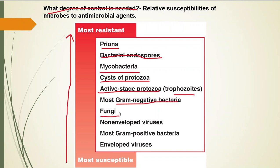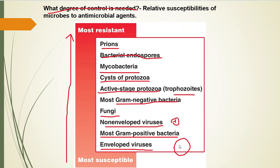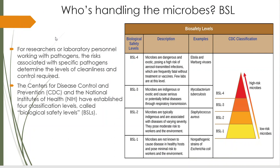Fungal infections are a little bit harder to deal with because fungi are eukaryotes like us — it's hard to find something to target that you don't also have. For example, one of the main things we target in fungi is their cell wall. We don't have cell walls, but I can't target their ribosomes because their ribosomes are the same as ours. Following that are non-enveloped viruses — just a capsid with genetic material inside — then most gram-positive bacteria, and finally our most susceptible: the enveloped viruses, which are a capsid within a bubble of plasma membrane taken from the host cell.